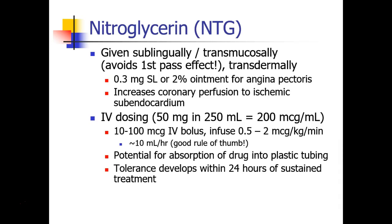A good rule of thumb for nitroglycerin, if you're not sure where to start, is just start the drip at 10 milliliters an hour, and then you can sit down and do the math and titrate the drip. Nitroglycerin can be absorbed into the plastic tubing, so it's often recommended that you waste the first 10 or so cc's through the tubing to bind up all those plastic sites. Patients often develop tolerance to nitroglycerin within about 24 hours of sustained treatment.